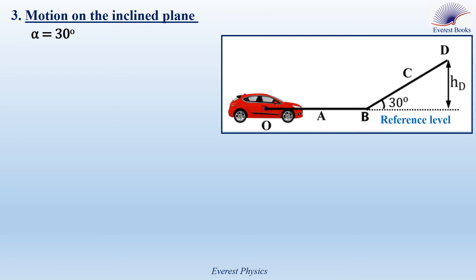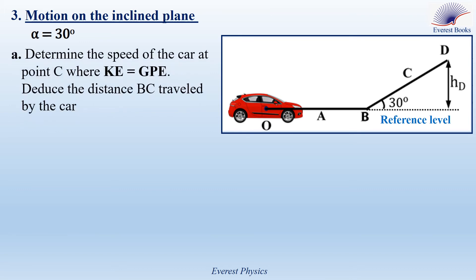Now let's study the motion of the car on the inclined plane. At point B, the driver removes his foot from the brake pedal, and the car continues its motion along the inclined plane BCD, which makes an angle of 30 degrees with the horizontal. The traction force in this part is zero. The question is: determine the speed of the car at point C, where KE equals GPE. Did you use the distance BC traveled by the car?